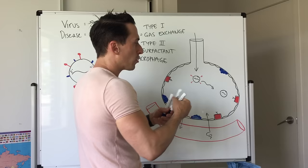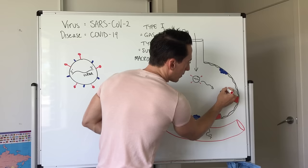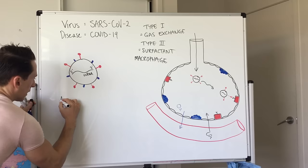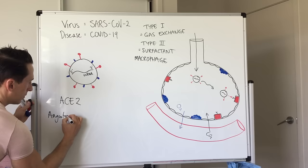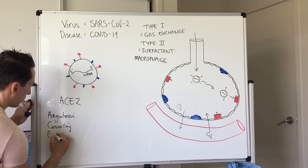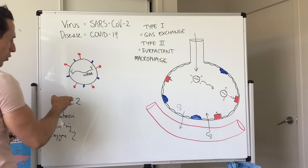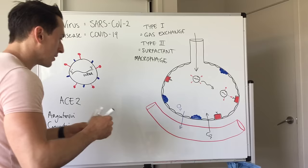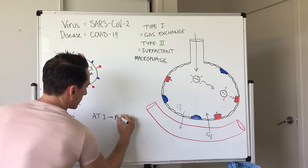The S proteins will bind to this lock, and what this lock is called is ACE2, and that stands for angiotensin converting enzyme 2. You may have heard of ACE before. What ACE does is it converts angiotensin 1 into angiotensin 2, and what angiotensin 2 does in the body is it increases blood pressure, it does it one way by constricting certain blood vessels.